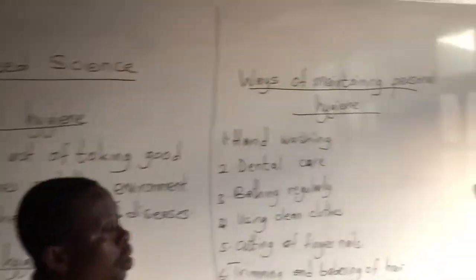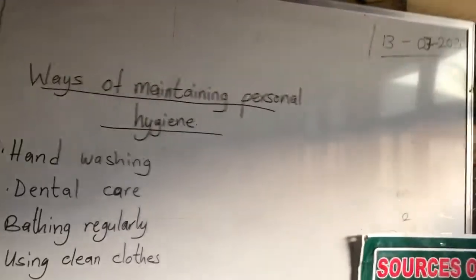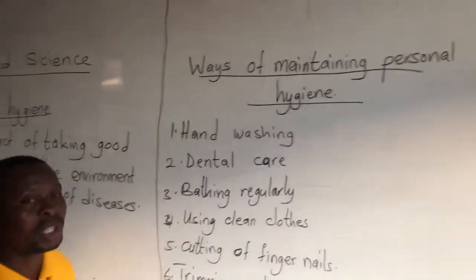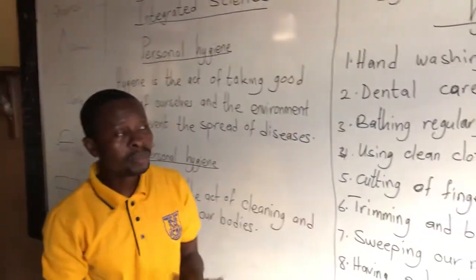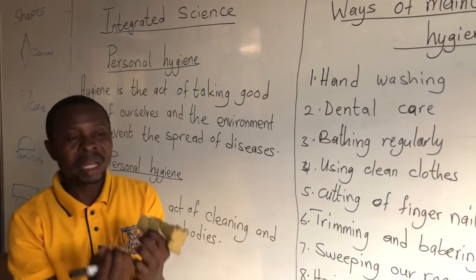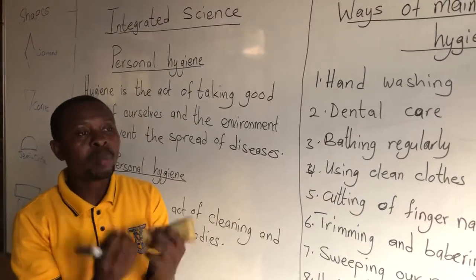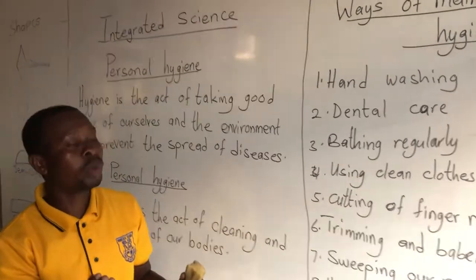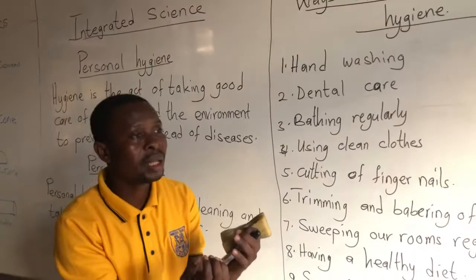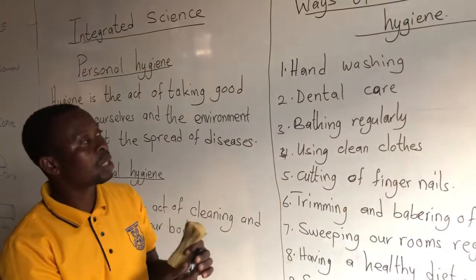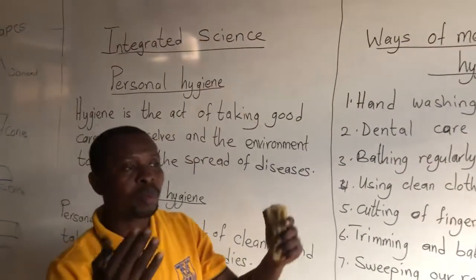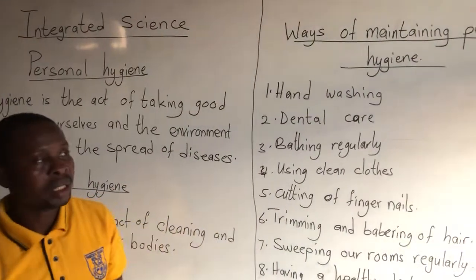Now let's look at some ways of maintaining personal hygiene. First, washing of our hands. We should always wash our hands to keep our hands neat and clean, because we use our hands to feed ourselves. So when our hands are dirty, we introduce germs into our body and that will cause the spread of disease. That is how we are trying to prevent the spread of disease.